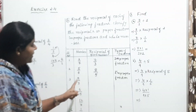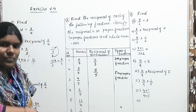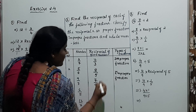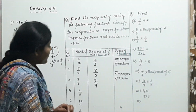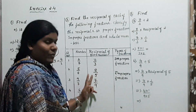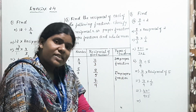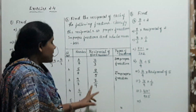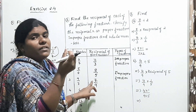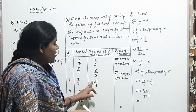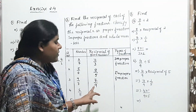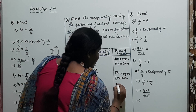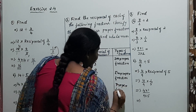Third example: 9/7 is given. The reciprocal of 9/7 is 7/9. Observe carefully — unlike the first two problems where numerator was greater than denominator, here the numerator value 7 is less than the denominator value 9. Therefore, this is a proper fraction.